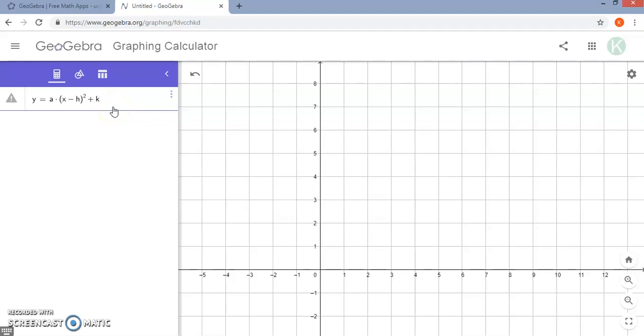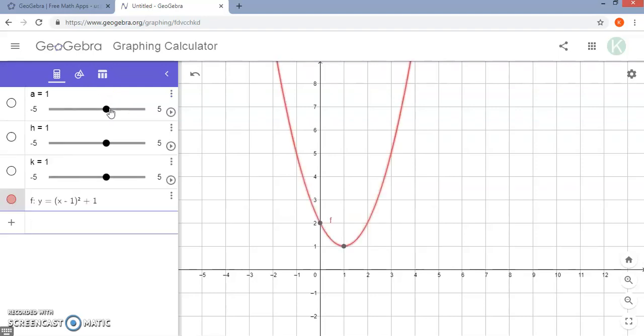So if I type my equation in like this, notice it creates a slider for each of the variables that I did not identify: a, h, and k. And so students, or yourself as the teacher, can adjust these values by moving the slider.